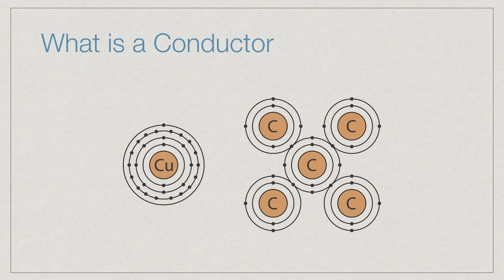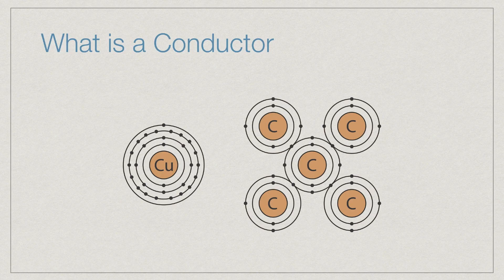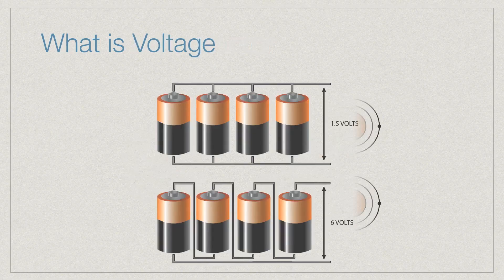Now copper is a good conductor because it has 31 empty spaces in its fourth shell. There's only one electron there, which means it can accommodate 31 additional electrons. A carbon molecule, however, can easily fill its four empty spaces in its just fourth shell as a comparison. So what is voltage?